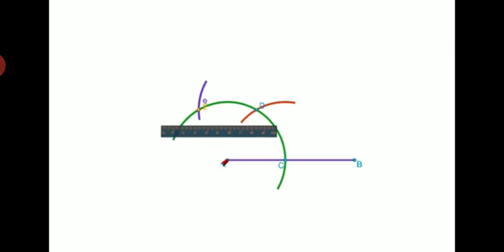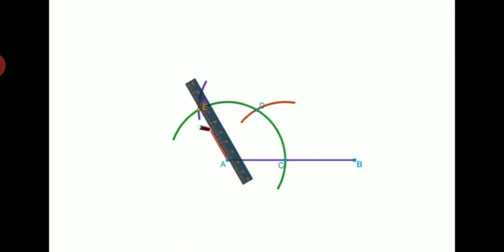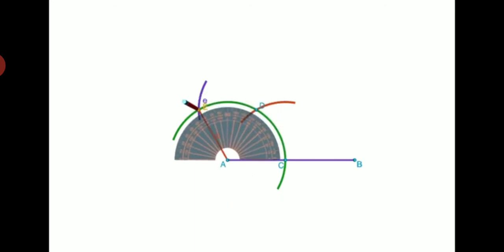After getting point E, join it with A and we get the desired 120-degree angle.